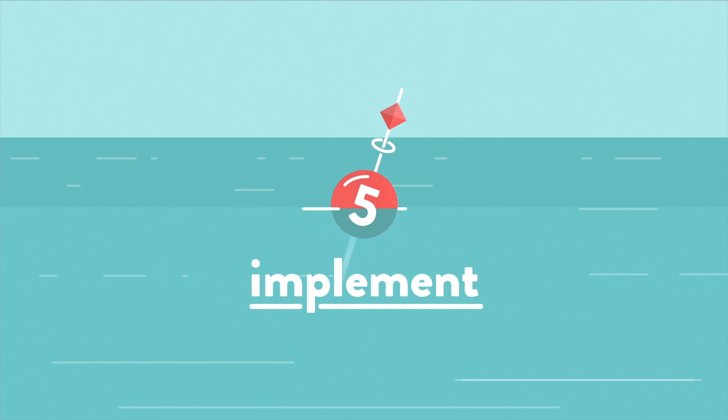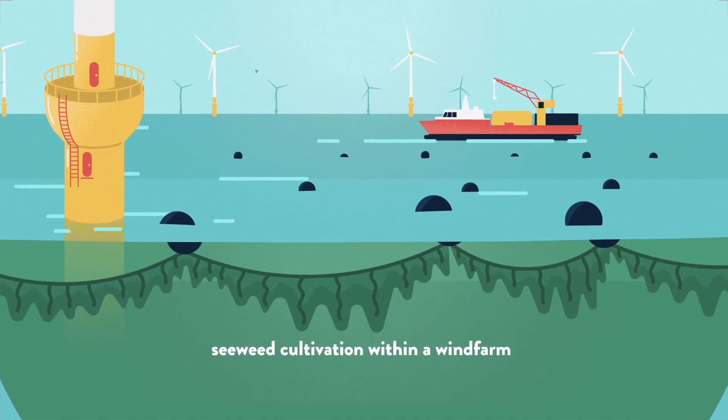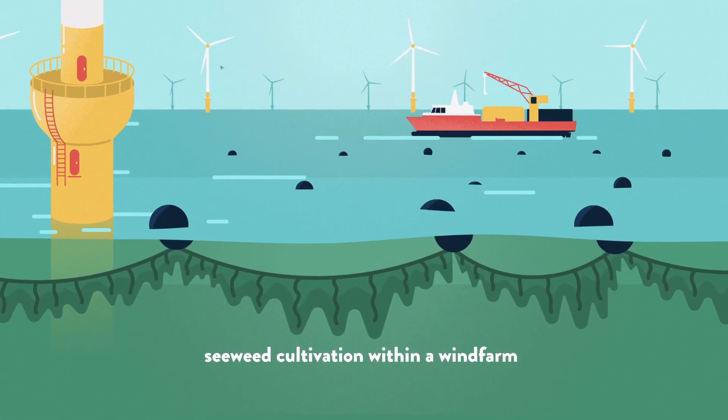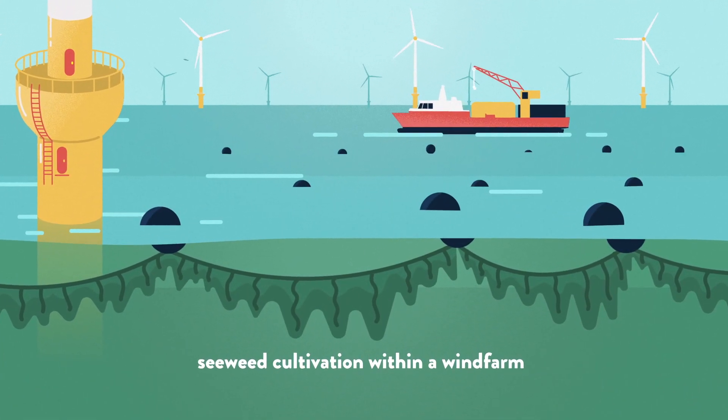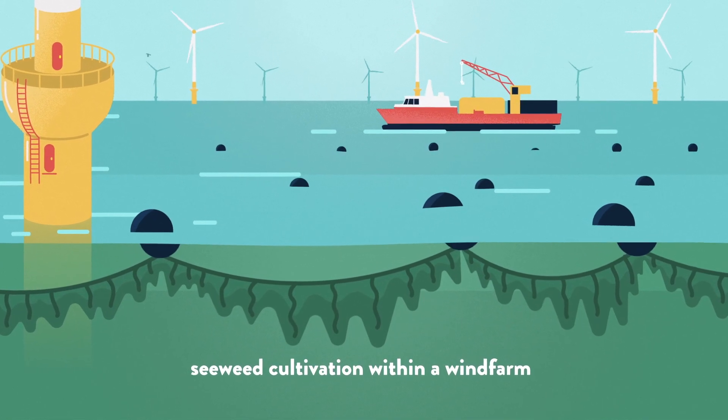Implement. During phase 5, the multi-use activities and mitigating measures are being implemented by the relevant actors, including actions taken by relevant authorities.